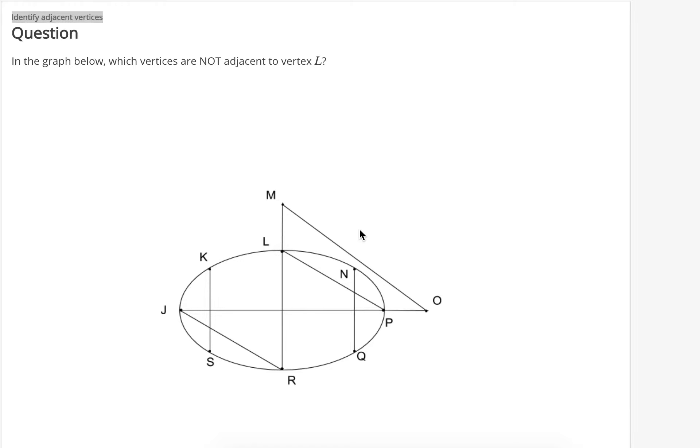For vertices to be adjacent, that means you need to be able to connect them through just one edge. Okay, so looking at vertex L,